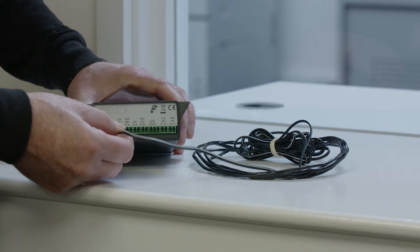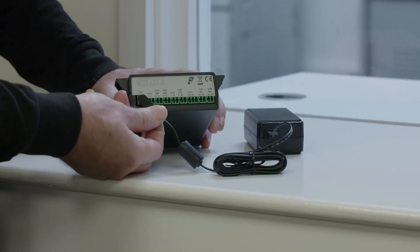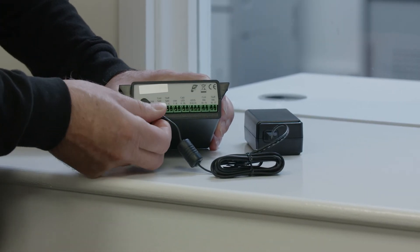For a hearing loop output, connect to sockets 1 and 2, labeled Loop. The power connection goes into the socket labeled PWR.